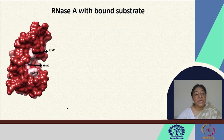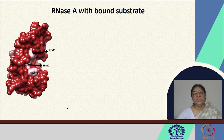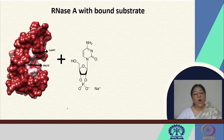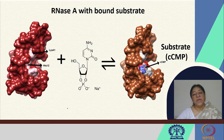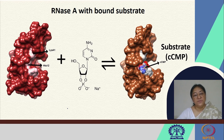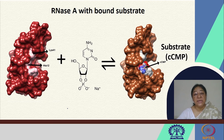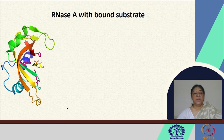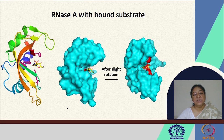Ribonuclease A with its bound substrate involves histidine 12 and histidine 119 in a transphosphorylation reaction followed by hydrolysis. The importance of these residues comes from their recognition of the substrate at the active site, which involves transition state formation. In the second step, the roles of the two histidines as base and acid are reversed. We can see how beautifully the substrate fits into the cleft of the enzyme.